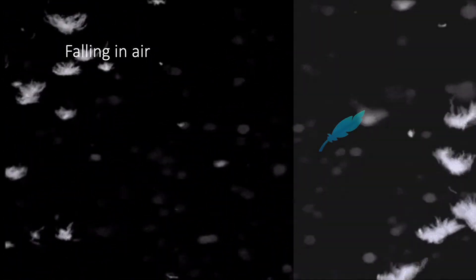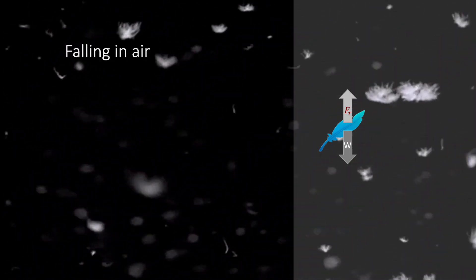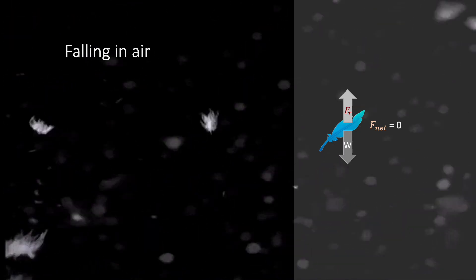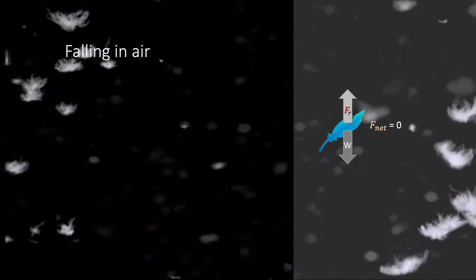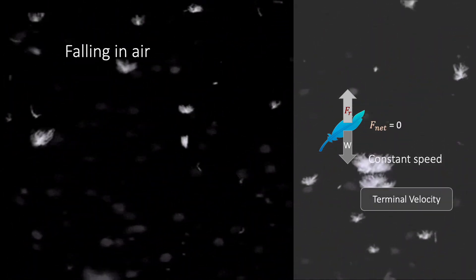This is because the feathers experience air resistance here which cancels out their weight entirely. Hence, net force on these feathers are zero, which by Newton's first law states that these feathers will continue their state of uniform speed, which is its terminal velocity.